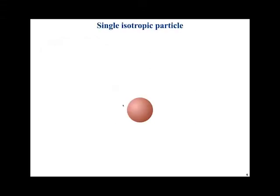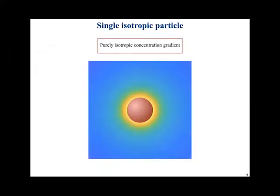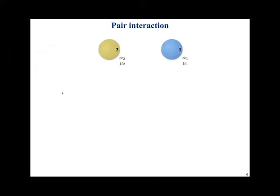Now, if we take one chemically active colloidal particle and put it in the bath of chemicals, nothing happens, because everything is purely isotropic — no preference in any direction, no net motion. But what happens when we have two spheres, each with its own chemical properties — sphere one with alpha_1 and mu_1, and sphere two with its own activity and mobility? Now things get interesting. We look at this in the limit of zero Reynolds number and zero Péclet number, so no inertia and no chemical advection.